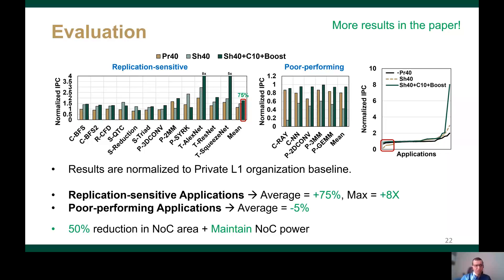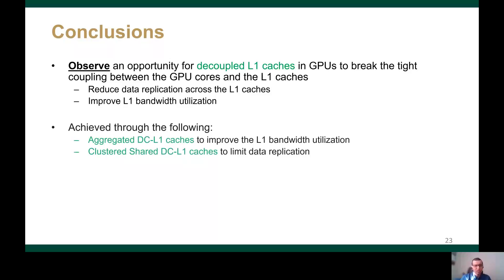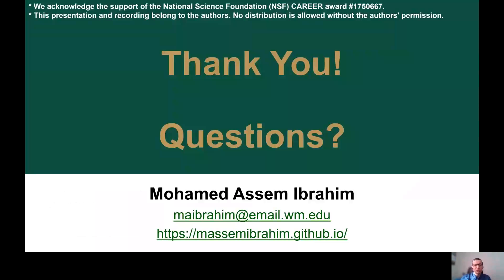More results and case studies can be found in the paper. To conclude, we observed an opportunity to employ decoupled L1 caches in GPUs to eliminate data replication across the L1 caches and improve the L1 bandwidth utilization. To get such benefits, we aggregated the DCL1s to improve bandwidth utilization, and we clustered the aggregated DCL1s and employed a shared L1 cache design to limit data replication. Our proposed design improved performance by 75% on average for replication-sensitive applications and incurred only 5% performance loss for replication-insensitive applications, while reducing the network area overhead by 50%. Thank you for watching, and I hope to see you in my talk on Tuesday, 2nd of March, in Session 5B.